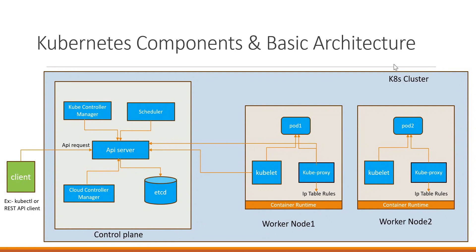In the diagram, we have a Kubernetes cluster and the client which will invoke the Kubernetes cluster. For example, if you have a container-based application and you want to deploy it in the Kubernetes cluster, we need some nodes where we are going to deploy the container-based application. Here in Kubernetes, we have the concept of worker nodes. In the worker nodes, Kubernetes will deploy the container-based applications. To run the container-based applications, we need a container runtime in each of the worker nodes.